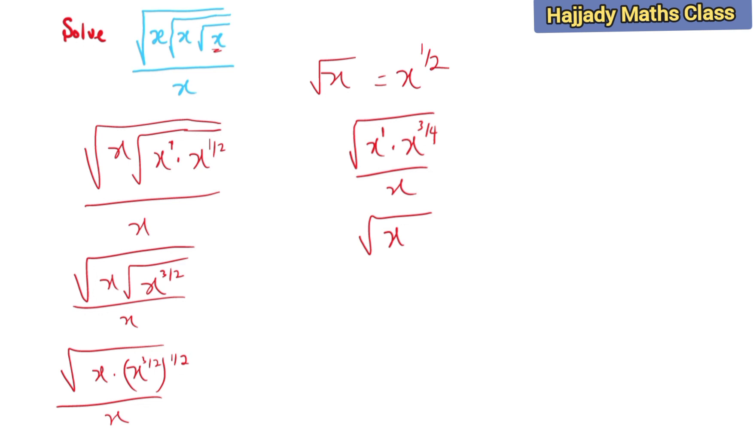So from this, taking out the roots here, I'm going to have x raised to power 7/4 multiplied by 1/2, all over x. So here I have x raised to power 7/8 over x.